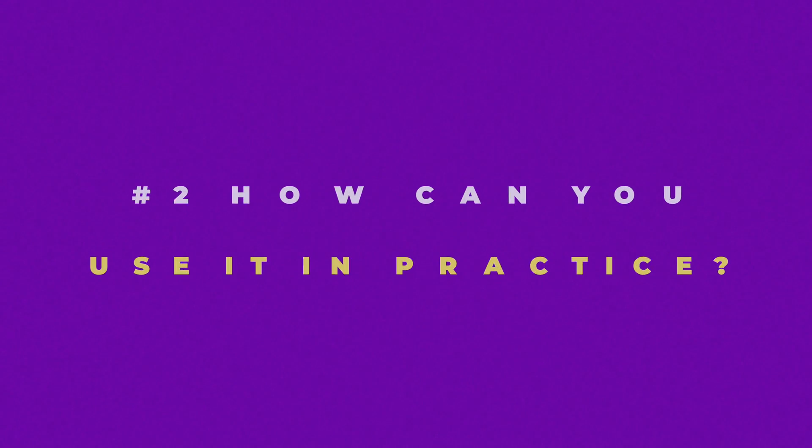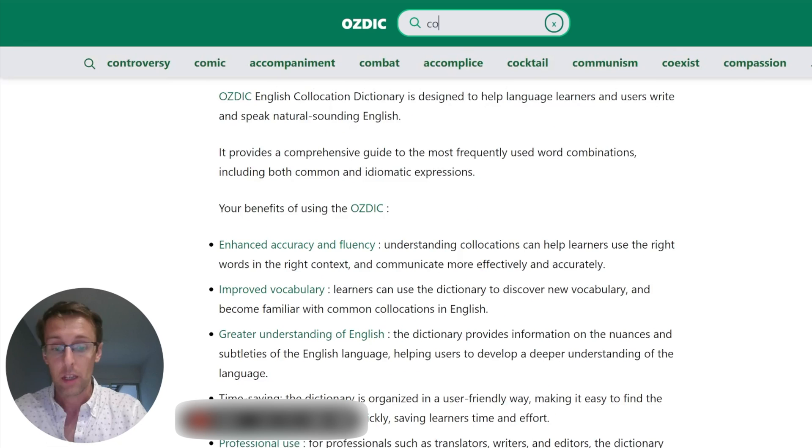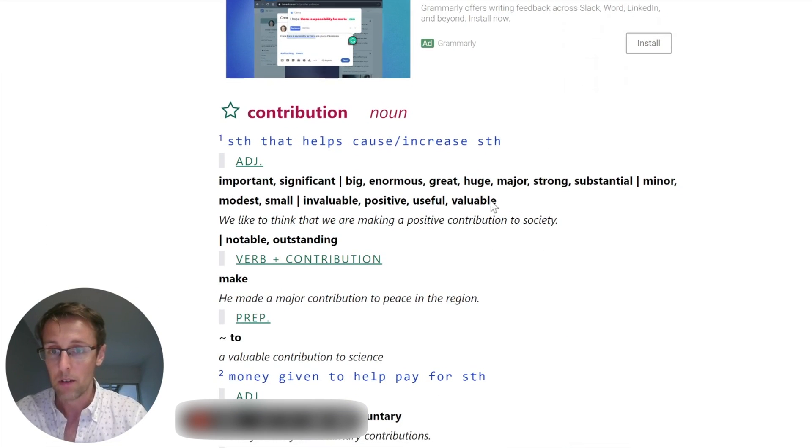So how can you use it in practice? Well, let's say you want to use the word contribution, like a contribution to research. And you want to talk about a big contribution or a good contribution that your research has made, but you kind of know that talking about using the word big or good isn't really academic, but you're not sure which words you could use with contribution. Or you may be wondering, is it contribution to, contribution of, what is the preposition after the word contribution? Well, if you put the word contribution into OZDIC, this is what you're going to get.